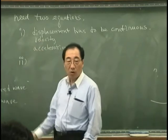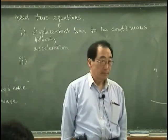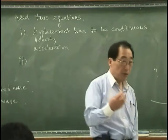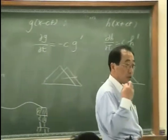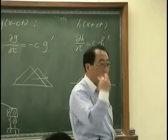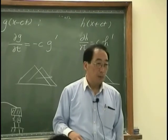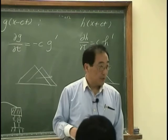This is what I call kinematic boundary condition. Kinematic boundary condition means boundary condition has to do with the displacement, velocity, or acceleration. What other boundary condition you can remember compared with the kinematic boundary condition?